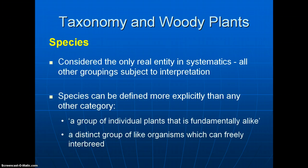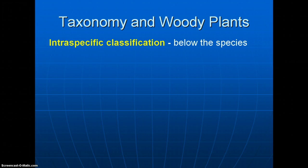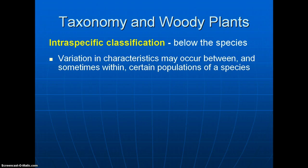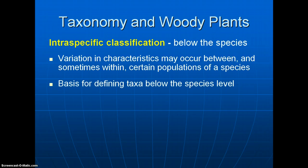Species can be defined more explicitly than any other category. One definition says they're a group of individual plants that is fundamentally alike. Another way to define it is that all members of a species can freely interbreed with each other, whereas you cannot interbreed between species. There is even a classification level below the species. A species covering a large geographical range may have populations in different parts of the country that evolve specific unique characteristics, and when these are significant enough, another category below species can be defined.